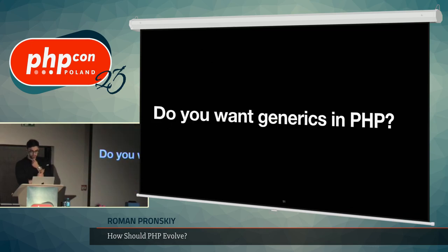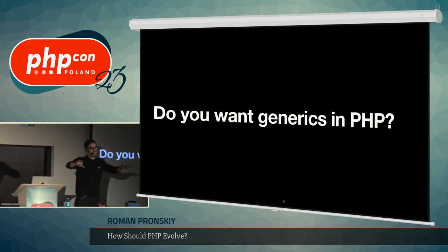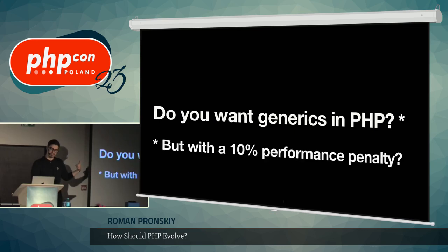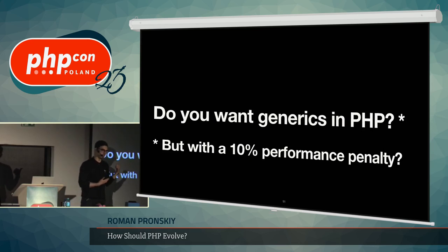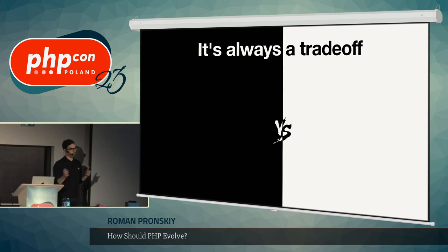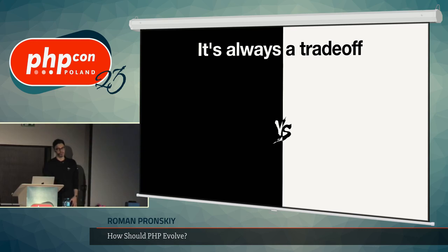For example: do you want generics in PHP? If you ask this on the internet, everyone will say yes, of course — it's the most wanted feature. But let me frame it differently: what if it comes with 10% performance overhead? Will you still want them? Any language decision is a trade-off. It always comes with pros and cons. Sometimes you want it, sometimes you don't.